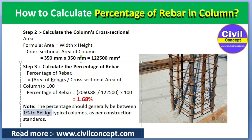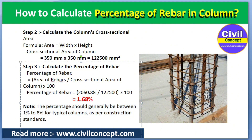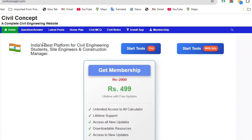We should note that the percentage of rebar should generally be between 1% and 8% for a typical column as per construction standards. We should not exceed 8%, and practically it may go up to 6%. The minimum rebar percentage in a column should not be less than 1%.